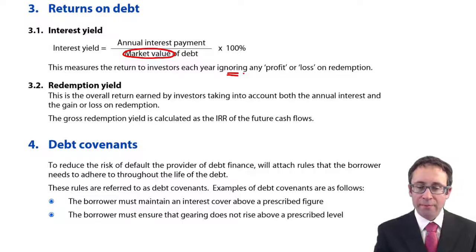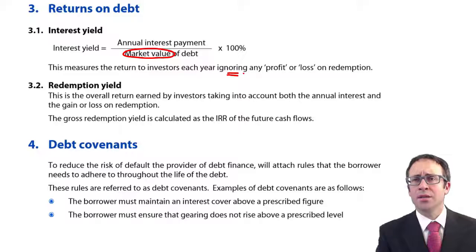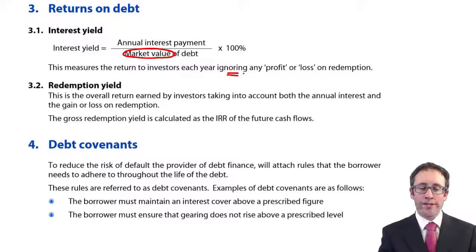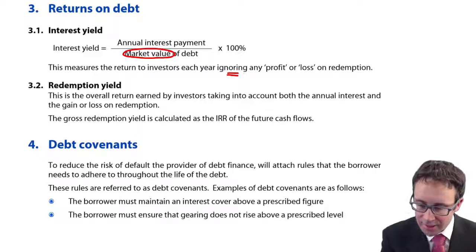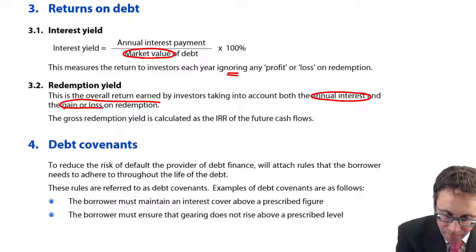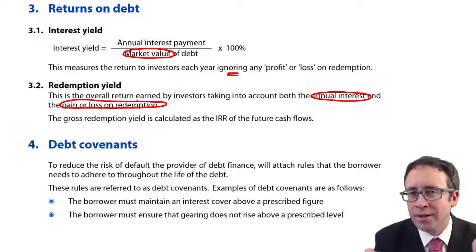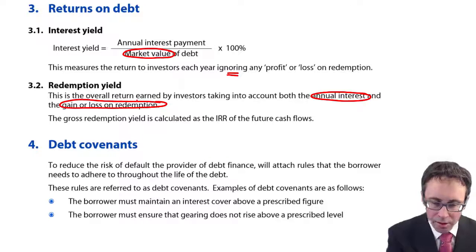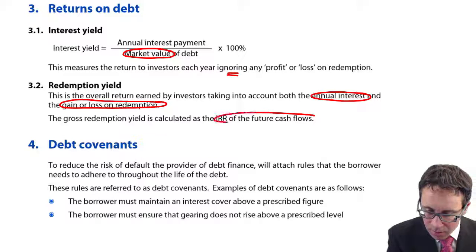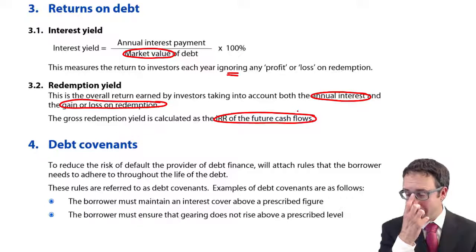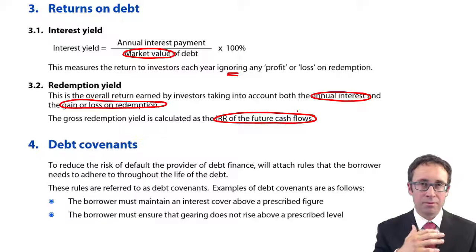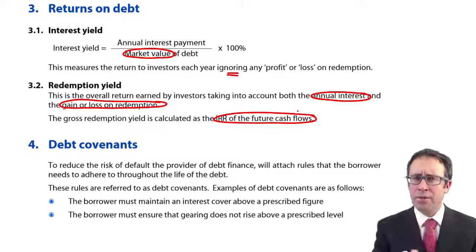That's where we look at the redemption yield — sometimes referred to as the gross redemption yield, or the yield to maturity (YTM). Just be aware of the terminology. This takes account of both the annual interest and the gain or loss on redemption. You've done this already in F1. The way we work out the gross redemption yield is to calculate the IRR of the future cash flows. You'll have done that in F1 looking at redeemable debentures.